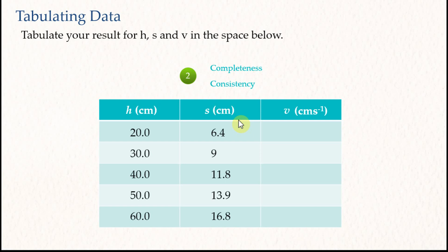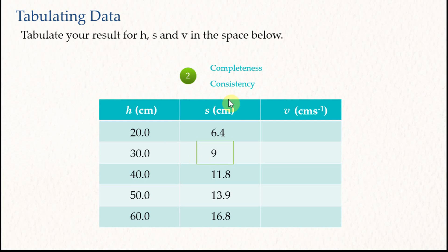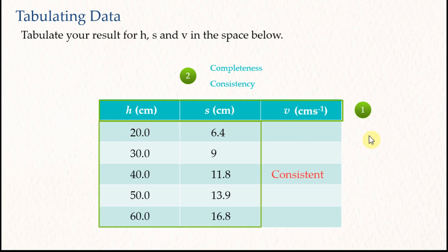For the data, the accuracy must be consistent — all values must have the same number of decimal places. For example, if all values have one decimal place but one value has none, that set of data is inconsistent and you will lose one mark. If all the data recorded are consistent, you get the second mark. So: one mark for completeness (titles and units) and one mark for consistency of the data.